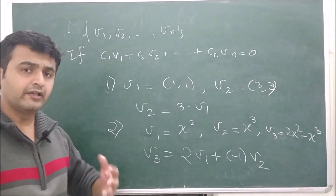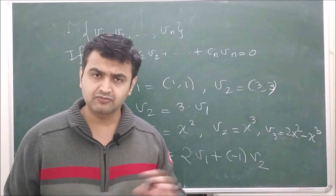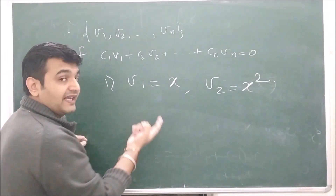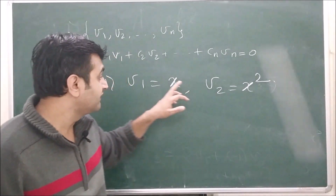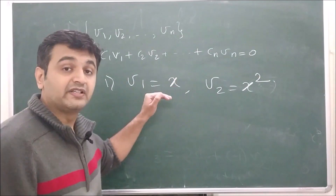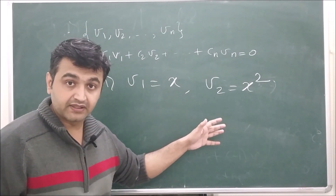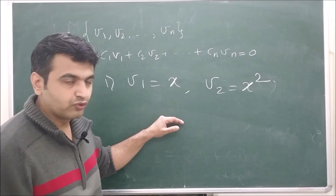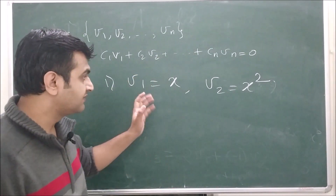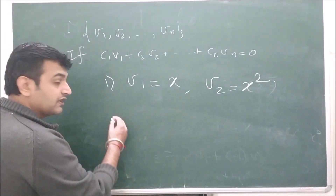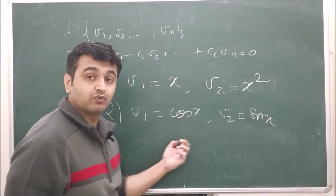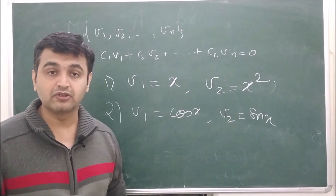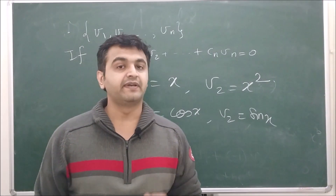When we say vectors are independent, one cannot be obtained from another by any linear combination. For example, v1 = x and v2 = x²: multiplying v1 by any number never changes its degree to match v2, so they are linearly independent over the real numbers. Similarly, cos x and sin x are linearly independent because no scalar multiple of cos gives sin x.